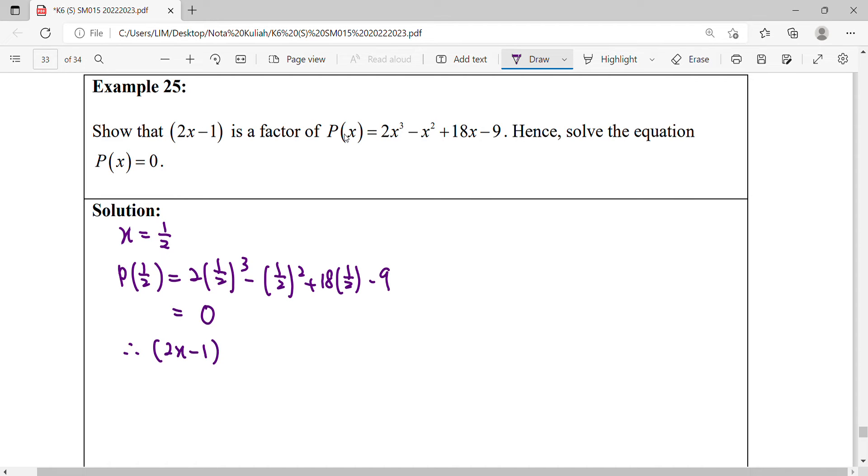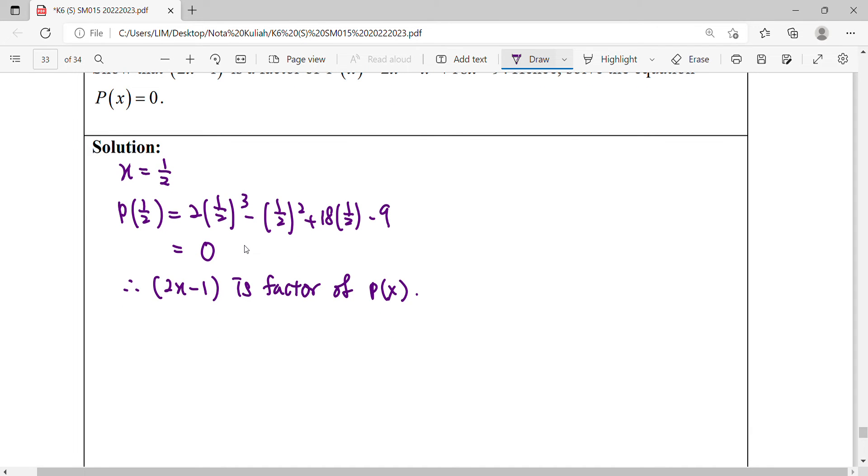From here we can conclude that we've proven that 2x minus 1 is a factor of our polynomial. Hence, using this concept, we have to solve the equation polynomial equals to 0.